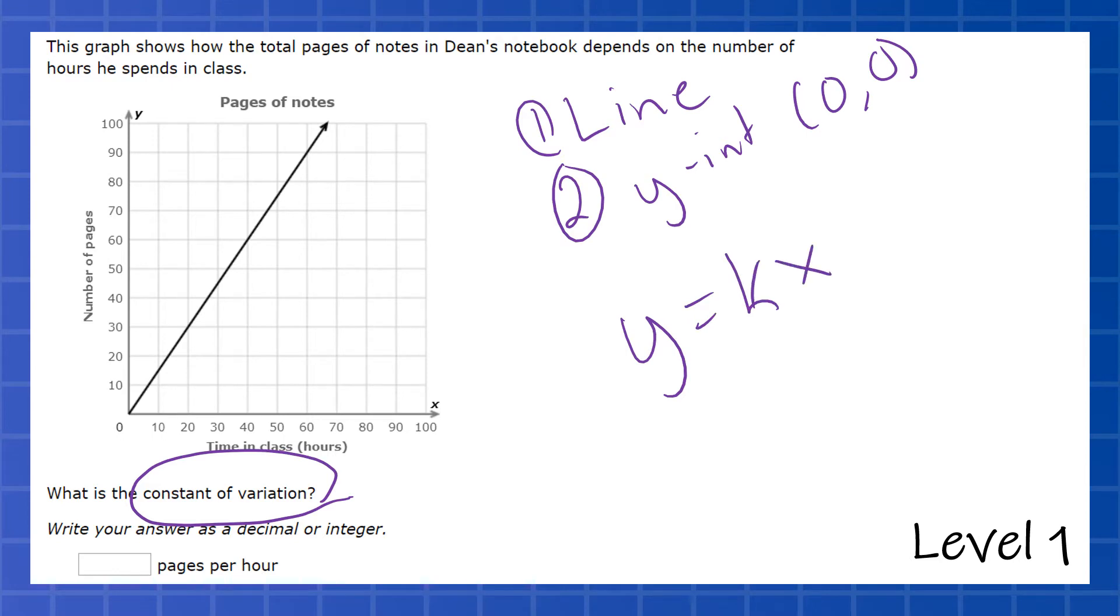And all that means is that there is a slope. And that is referred to as the k, the constant of variation. So all we need to do is identify the slope.